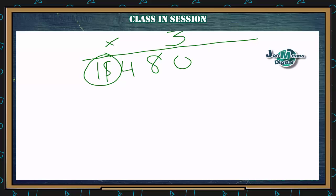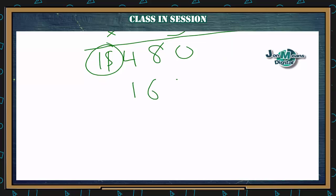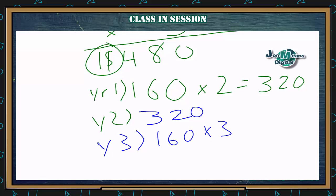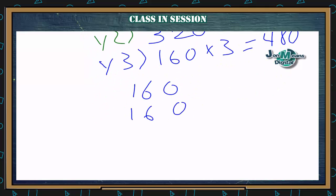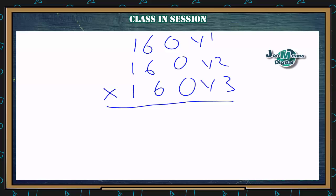Now if it said anything else like find the first year, second year, and third year, basically all you do is write this problem out in long form. So we have $160 right here, so year one would be 160. Year two would be 160 times 2, which equals 320. And then year three would be 160 times 3, which equals 480.